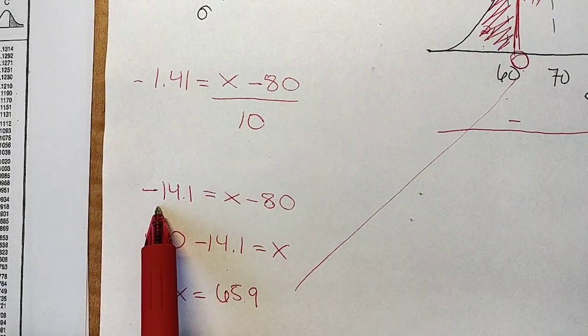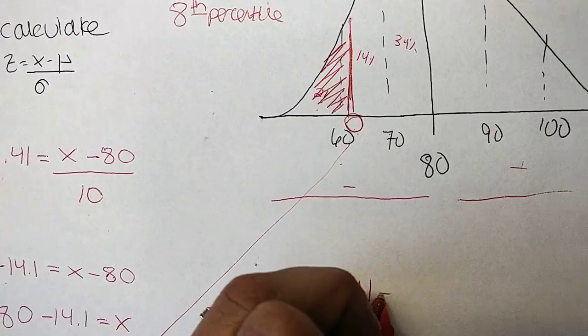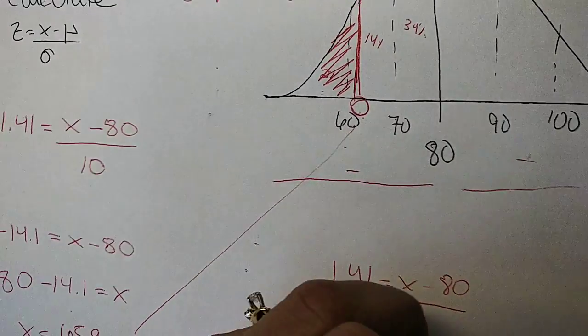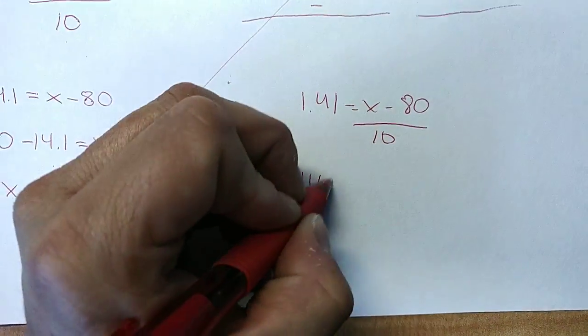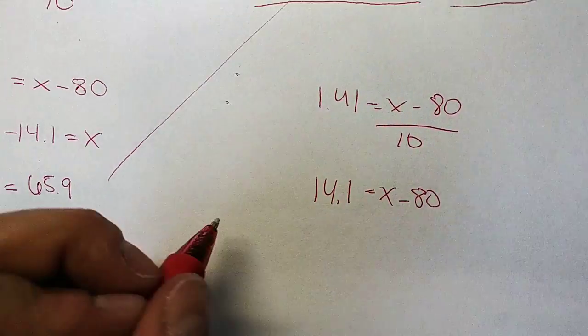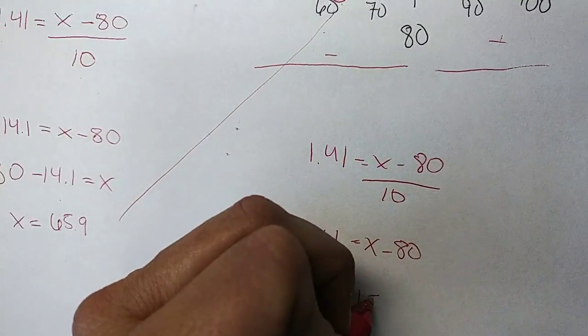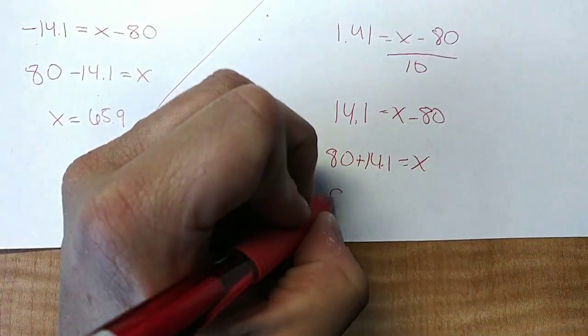Now, let's say I had forgotten to put the negative in my Z score. Then I would have had 1.41 equals X minus 80 divided by 10. Then I would have done 14.1 equals X minus 80. Then I would have added 80 to either side. So that would have been 80 plus 14.1 equals X. And then that would have been 94.